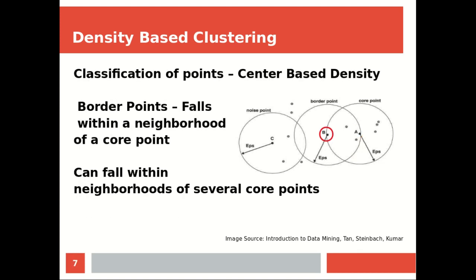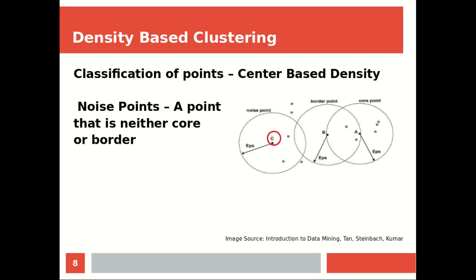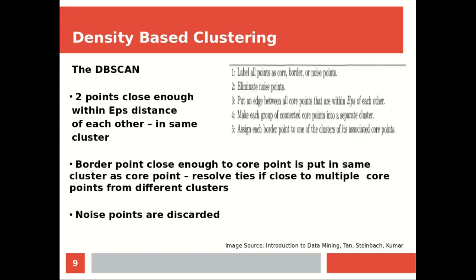Border points are not core points themselves, but they fall within the neighborhood of one or more core points — that is the definition of a border point. Noise points are neither core points nor border points. This brings us to the DBSCAN algorithm, which labels each point as a core, border, or noise point.